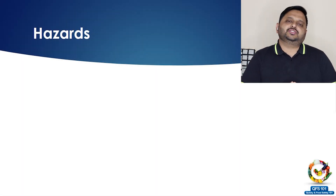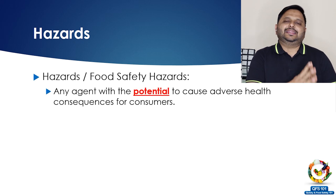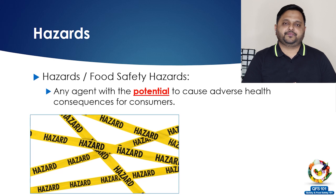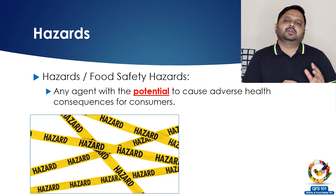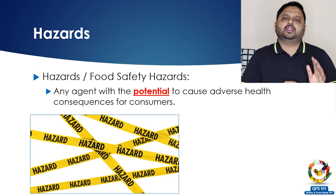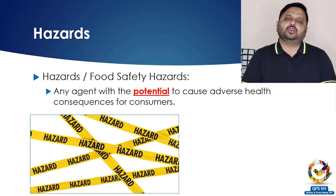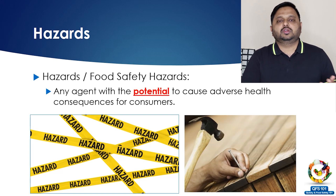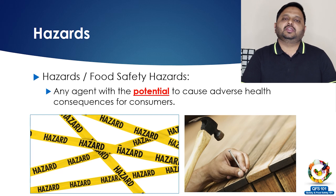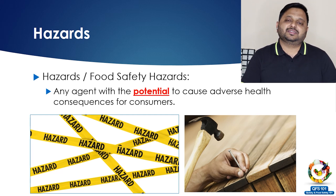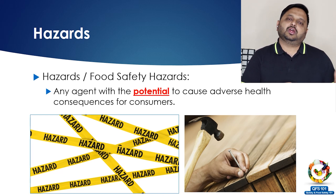In food safety, any agent which can potentially cause illness, injury, or harm to a consumer is called a hazard. The word 'potential' is very important here — a hazard by itself, if controlled properly, does not pose a problem. Think of a hammer: it's a very good tool, but if used improperly it can cause damage. Similarly, all food safety hazards have controls; if we control them properly the risk minimizes, but if not, they can cause illness, injury, or harm to the consumer.